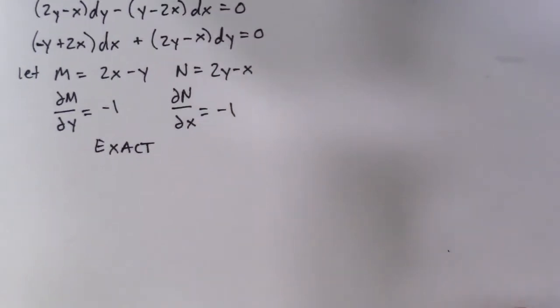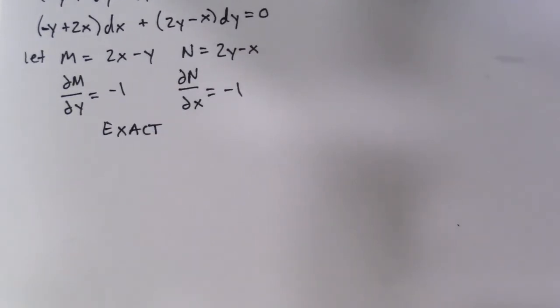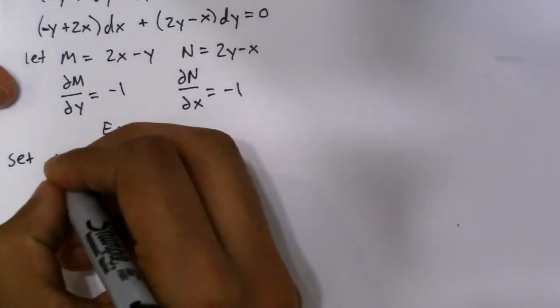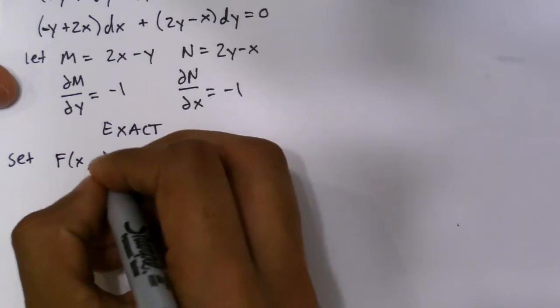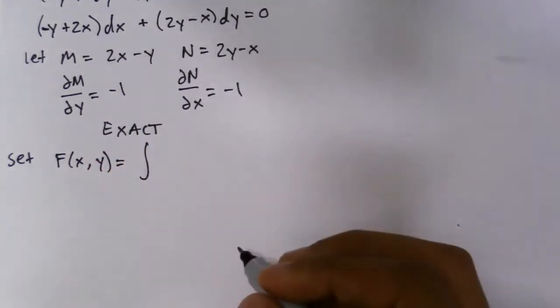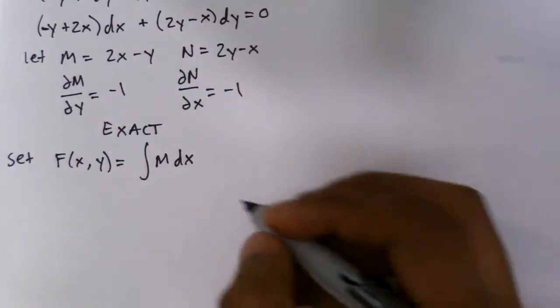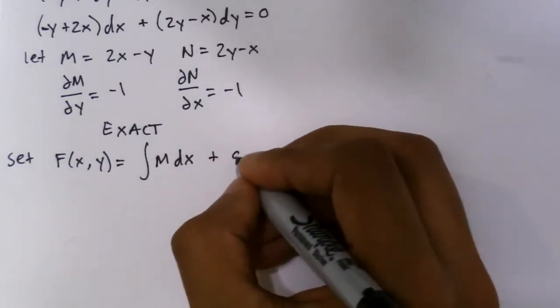Now we're going to go through the method of solving exact differential equations. So first of all, we're going to have to set an equation such that F(x, y) equals the integral of M dx plus g(y).